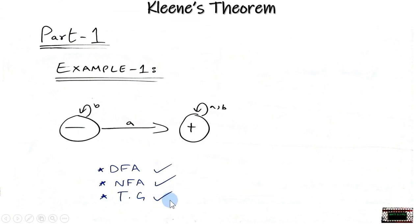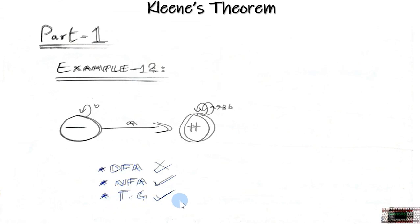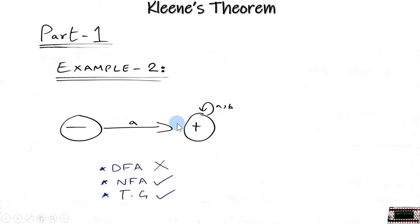This is Kleene's theorem part 1 that any FA is also a TG. In the second example, this example does not follow the rules of the DFA because there is no path defined for the B here. So it is not a DFA.